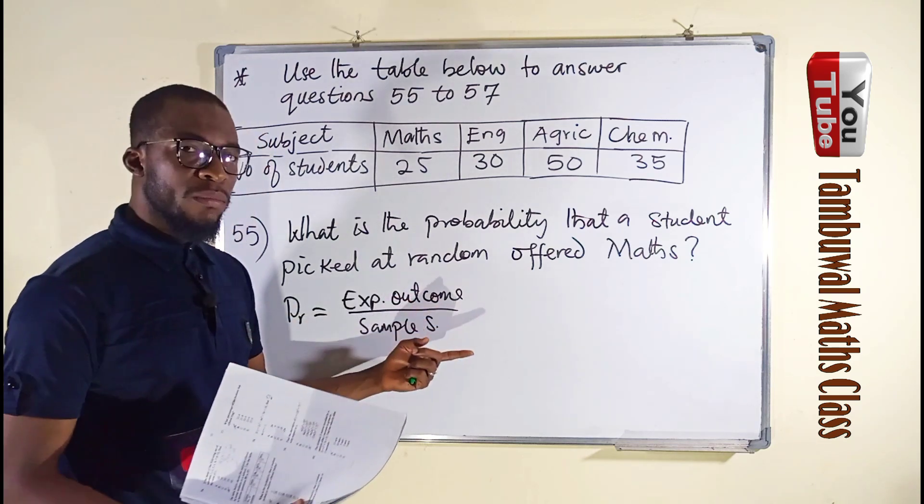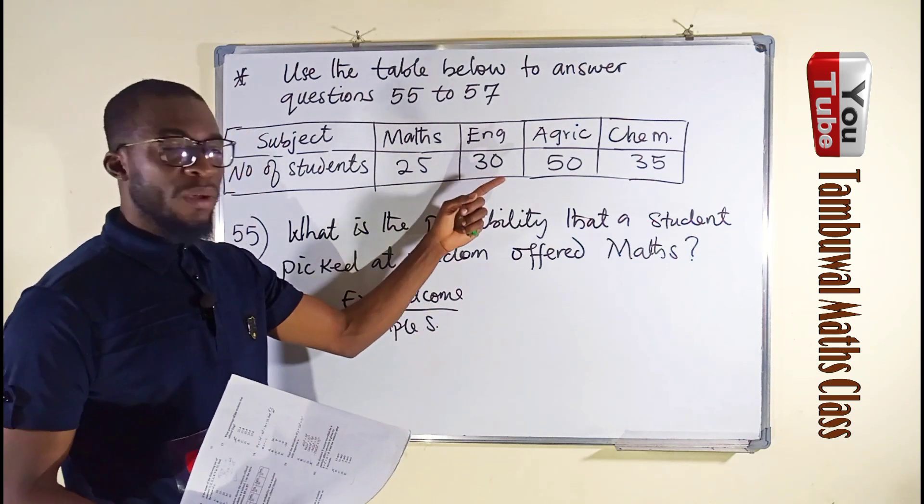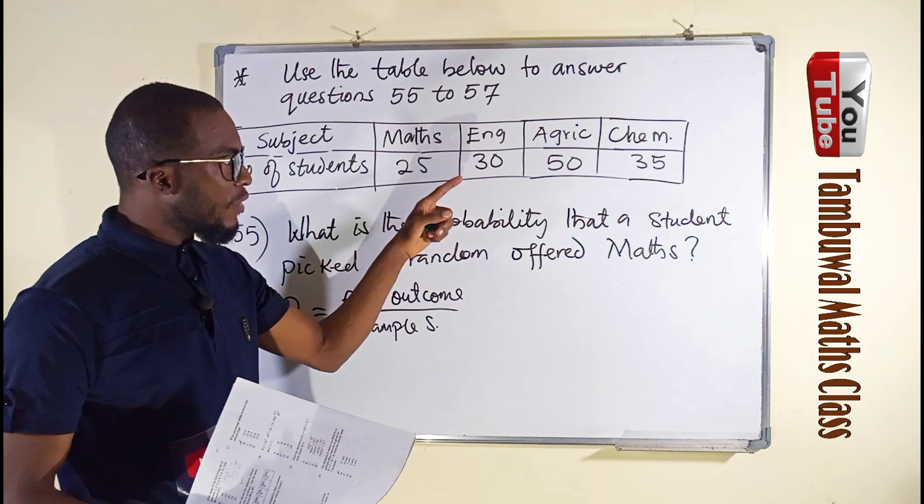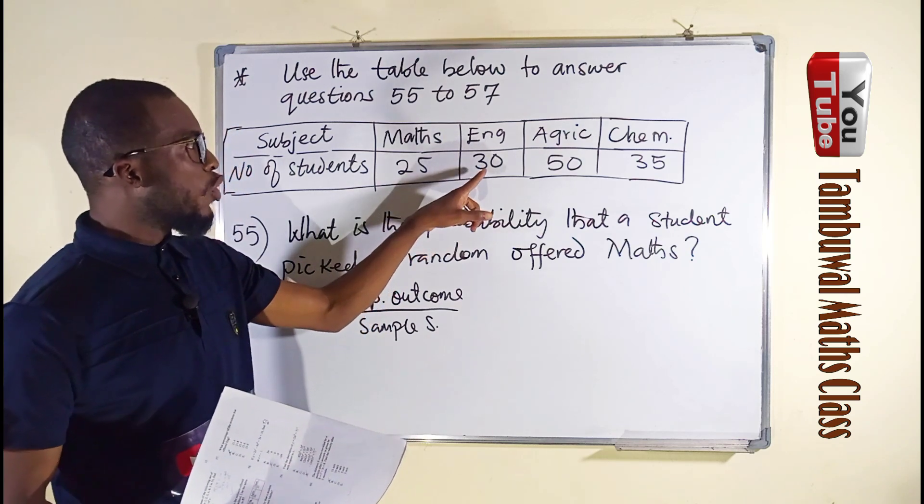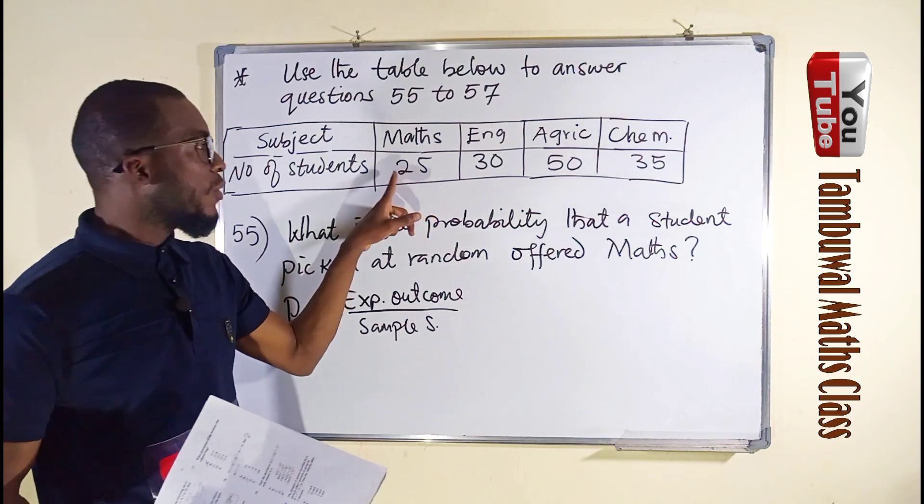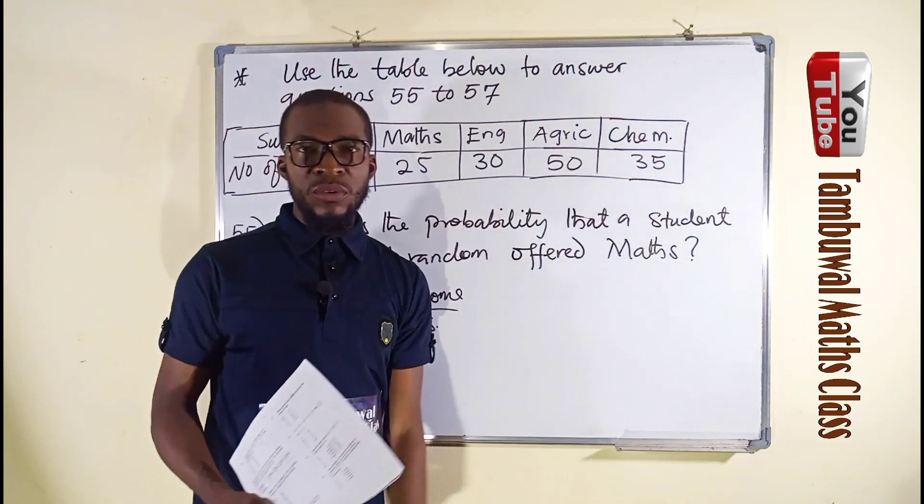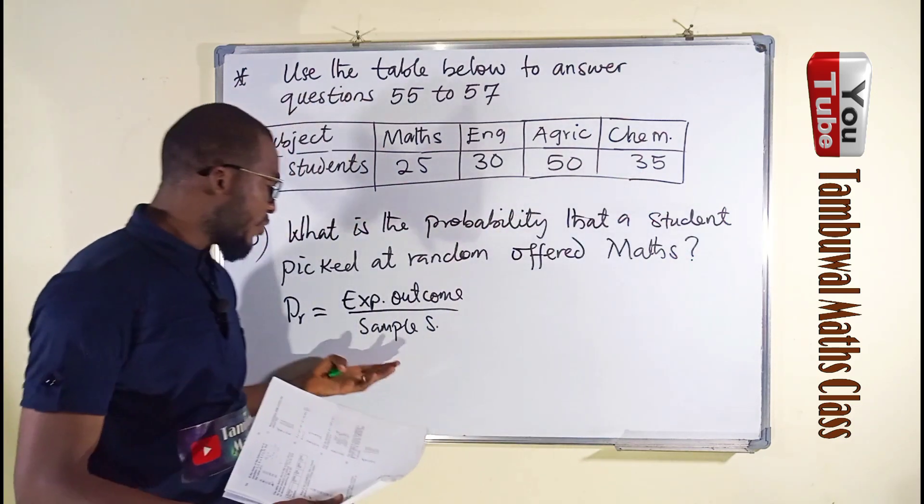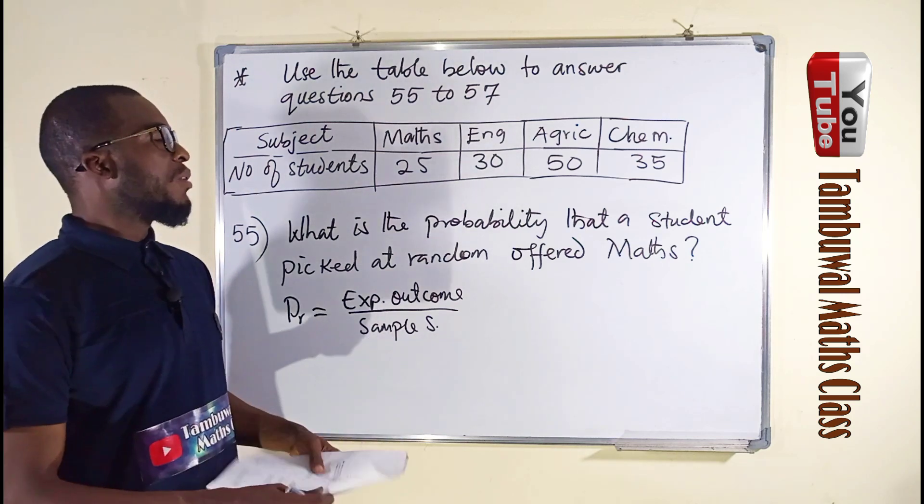The expected outcome here is mathematics. That single person must come out of these 25 students out of all the total number of students, which we refer to as the sample space. Now let us find out what is this sample space.